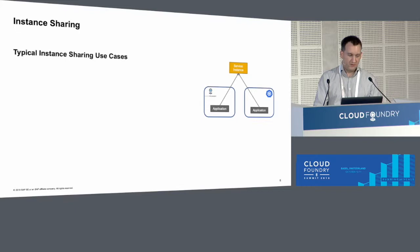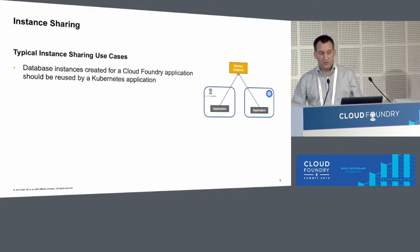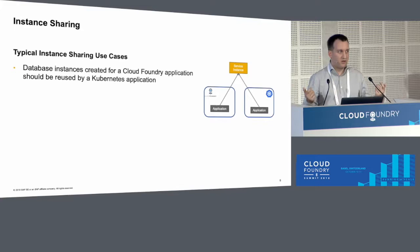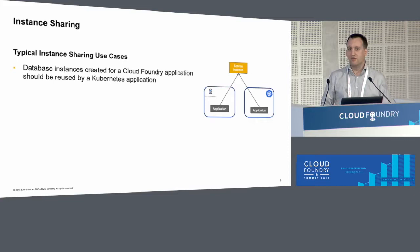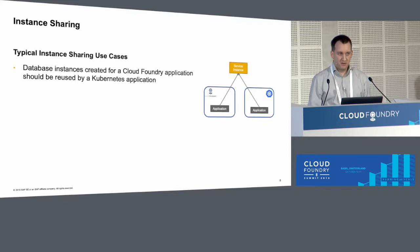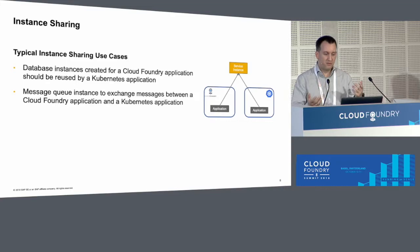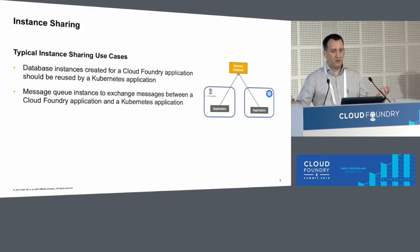The other thing this gives us is instance sharing. We have a few typical use cases. One is you have a database created for a Cloud Foundry application, and you now want to reuse this in your Kubernetes cluster. There are scenarios where you really want to share the same database because the data is huge and you don't want to transfer data back and forth, or the back-end system might be expensive and you don't want to have two of them. The other typical use case is you have a message queue, and both ends need an instance of this message queue — and instance sharing across platforms gives us the ability to establish this connection.